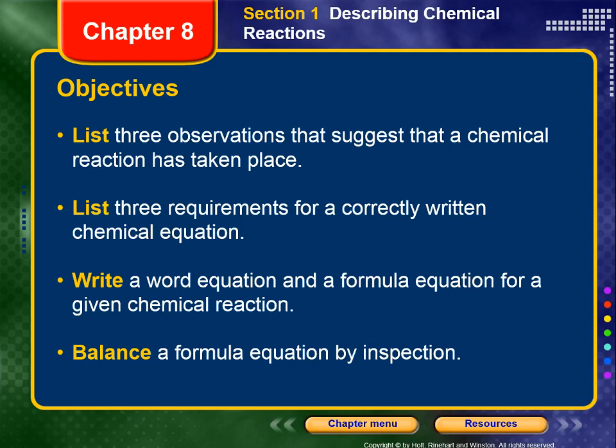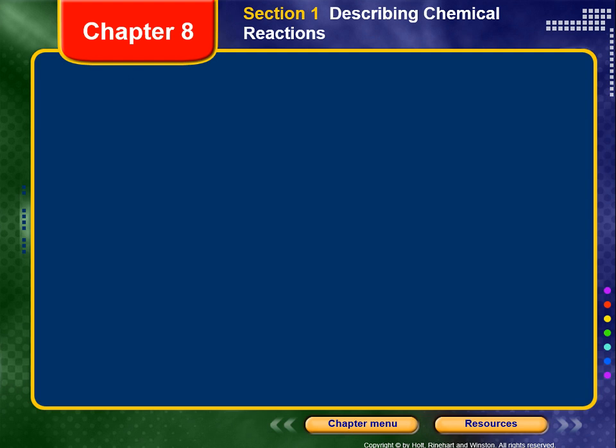All right, Chemistry, this is your first video lecture for Chapter 8. We're going to start in Section 1, Describing Chemical Reactions. At the end of this video, I want you to be able to list three observations that suggest that a chemical reaction has taken place, list three requirements for a correctly written chemical equation, write a word equation and a formula equation for a given chemical reaction, and lastly, balance a formula equation by inspection.